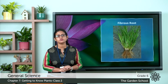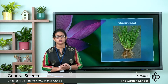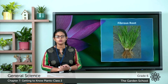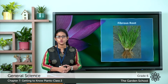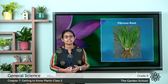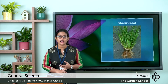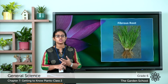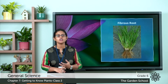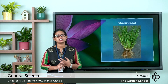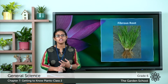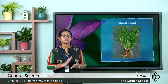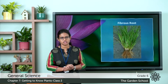So these are the two types of roots. The taproot system consists of a thick main root with several roots attached to it. In fibrous roots, there is no thick main root — only several thin roots that grow from the base of the stem.